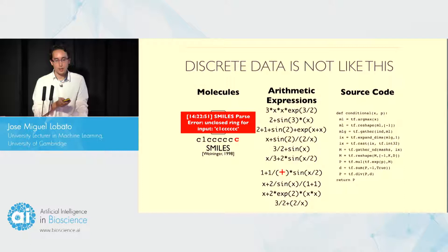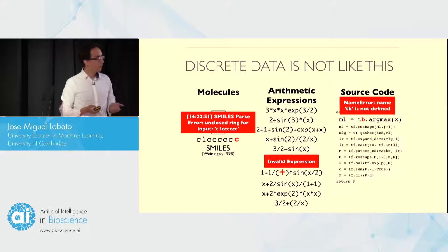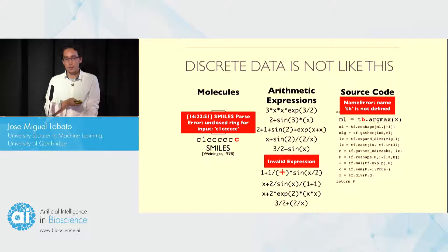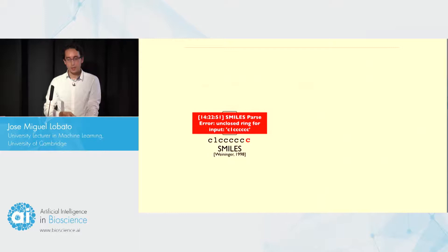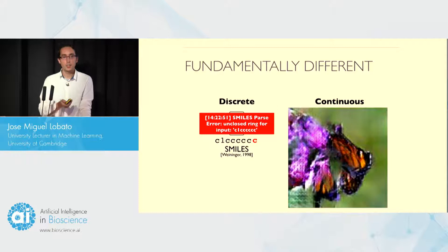If we run this string encoding a molecule into a bioinformatics software, we are going to have errors. The smallest mistakes can break the validity of these elements. For example, if we have an invalid symbol, our generative model may make a mistake and we again obtain invalid expressions. For source code, something similar occurs — small mistakes mean that when we execute the code in an interpreter, we are going to have problems.